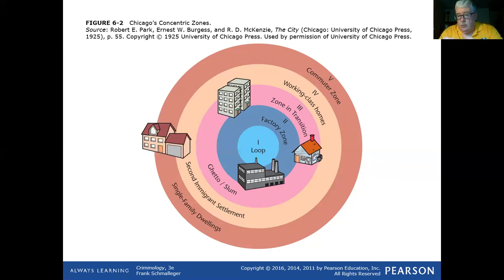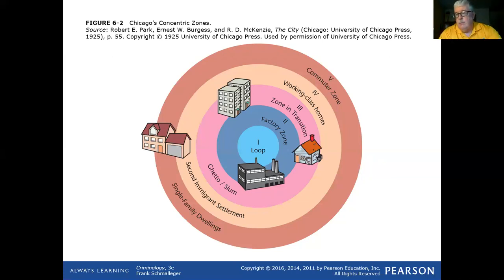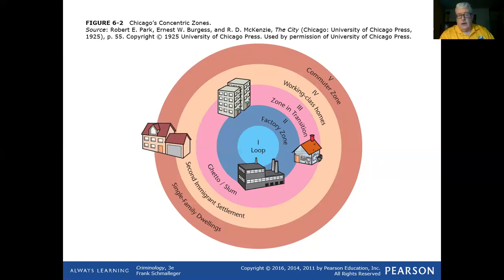In Philadelphia, this could be extreme northeast Philadelphia as the commuter zone. Going north, you'd go into Bensalem and other areas. Going west, into different communities out that way. Coming east, you're crossing into New Jersey as a commuter zone.